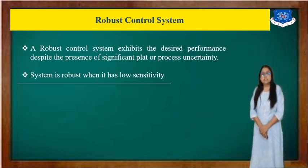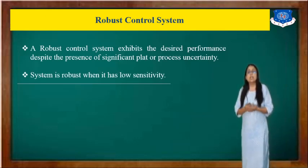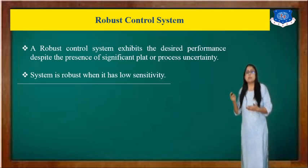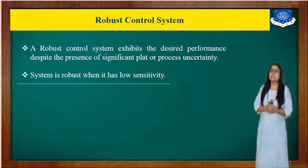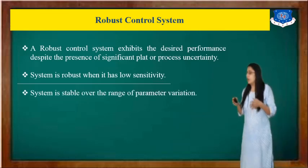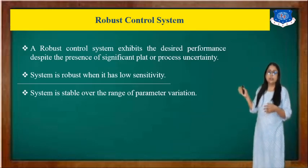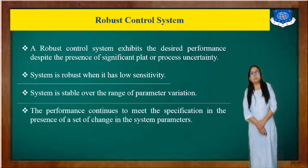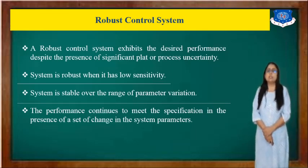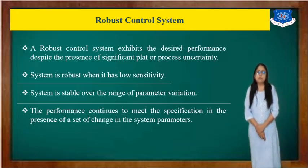A system is robust when it has low sensitivity — meaning if any parameter changes, the system stability should not change. That's why the system is robust when it has low sensitivity. A system is stable over a wide range of parameter variations, and system performance continues to meet specifications in the presence of changes in system parameters.